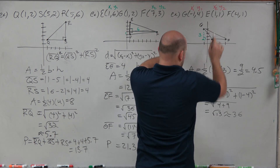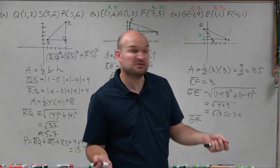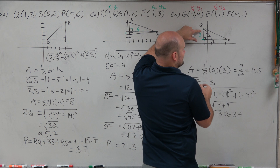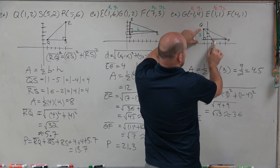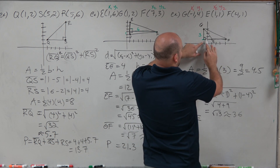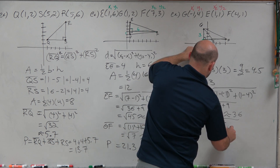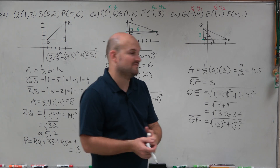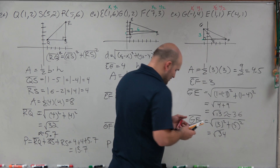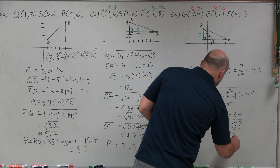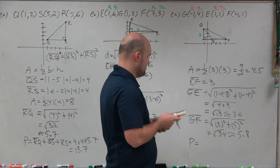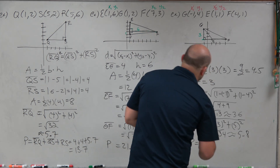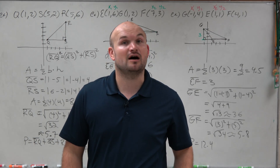For GF, I'll use the Pythagorean theorem again since I created a right triangle with the height of 3 and the horizontal distance from the height to F, which is 5. So GF equals the square root of 3 squared plus 5 squared, which is 9 plus 25 equals the square root of 34, approximately 5.8. Therefore, the perimeter is 3 plus 3.6 plus 5.8, equaling 12.4. That is how you find the area and perimeter of a triangle when given 3 points. Thanks.